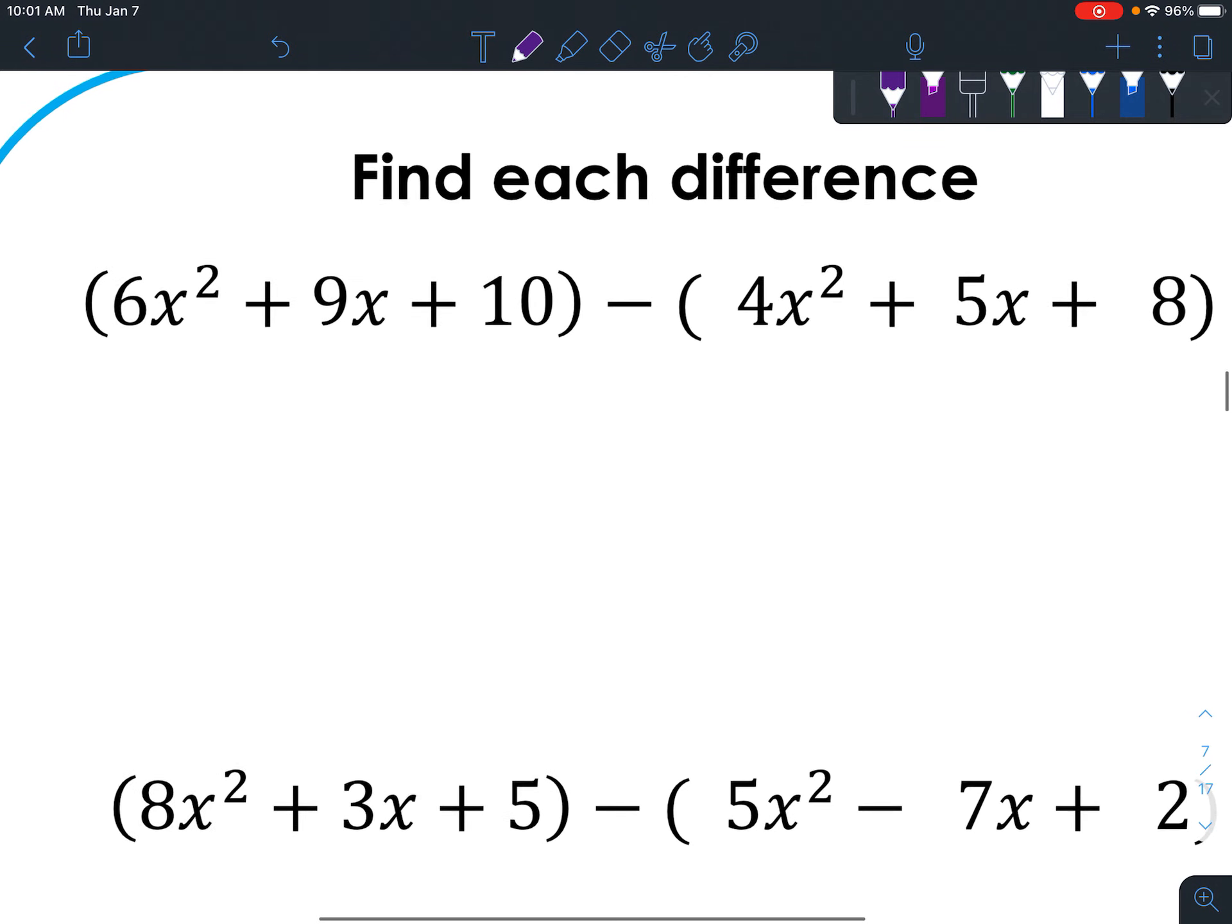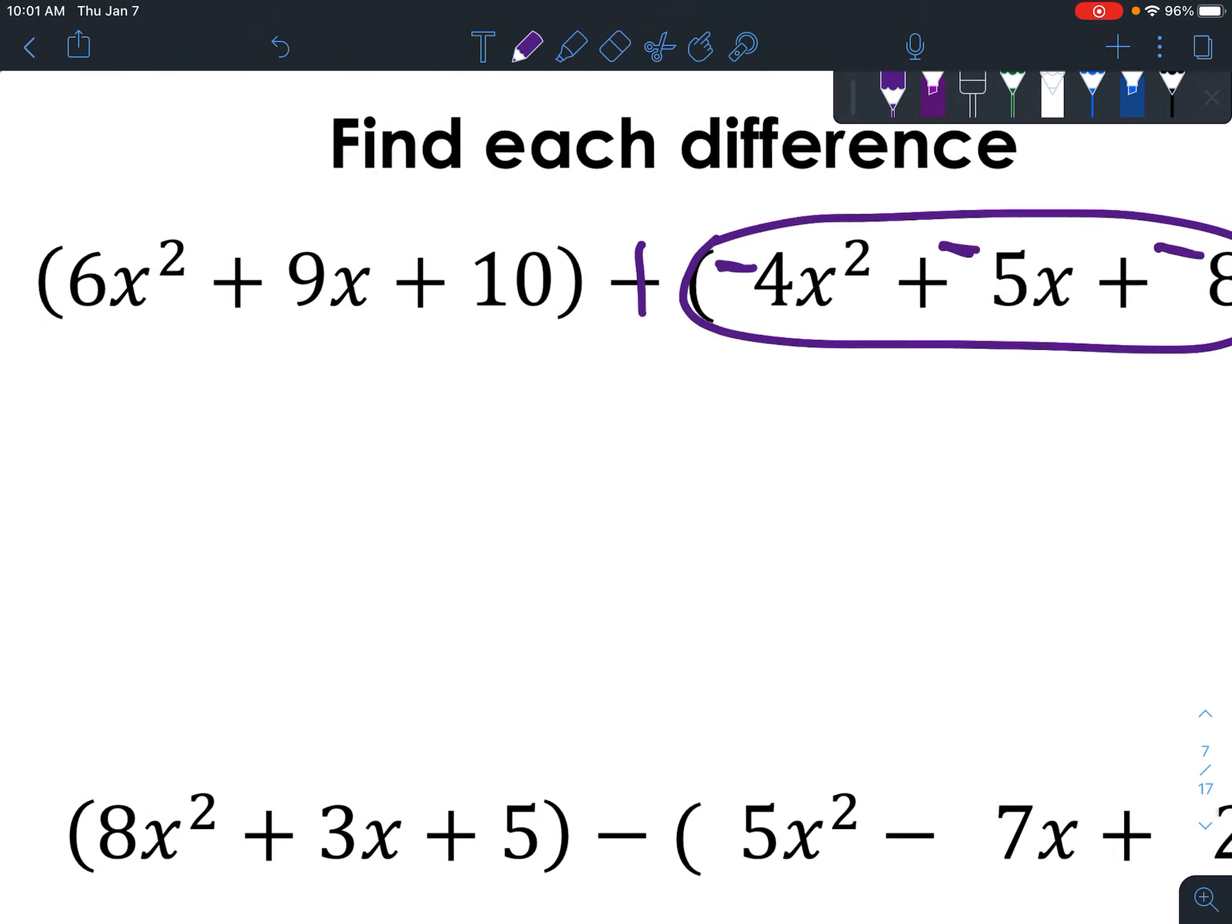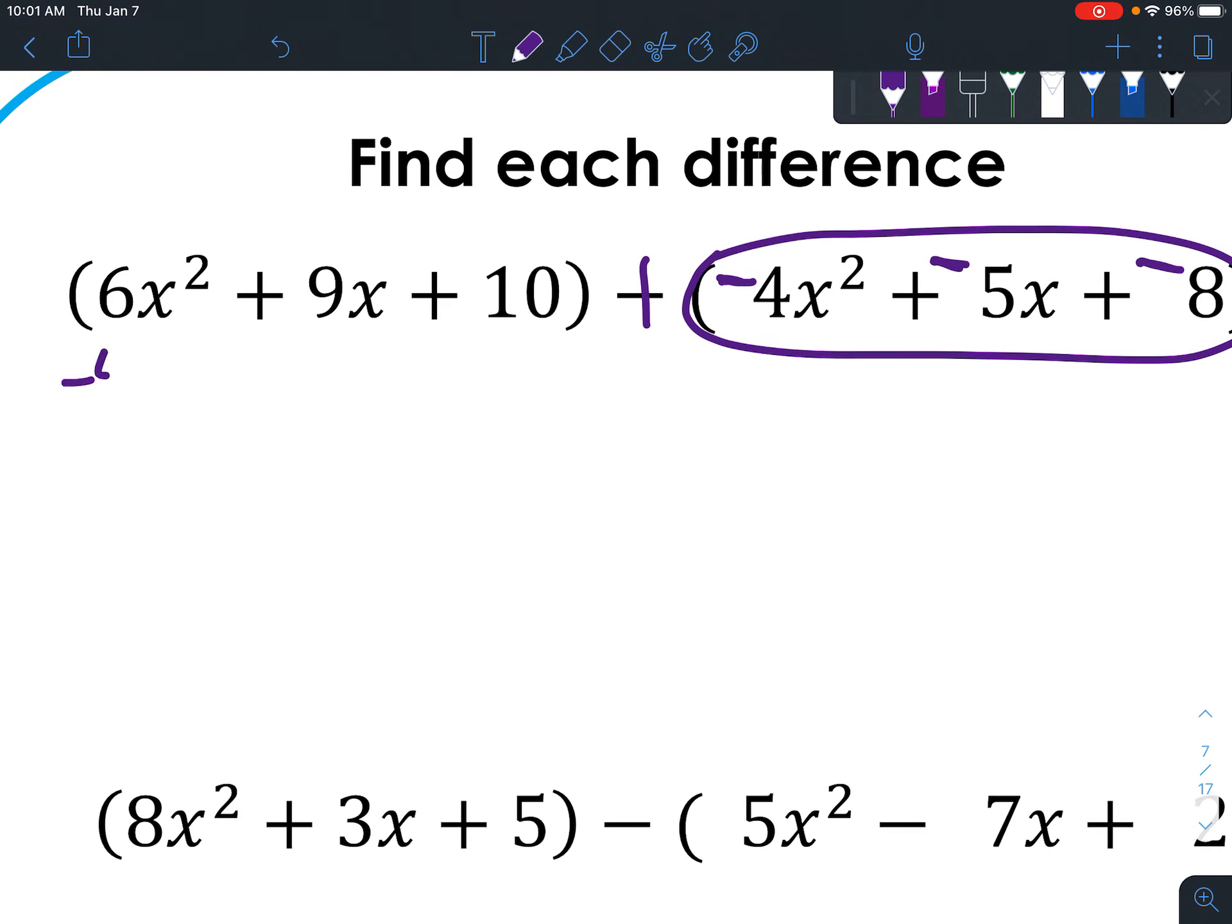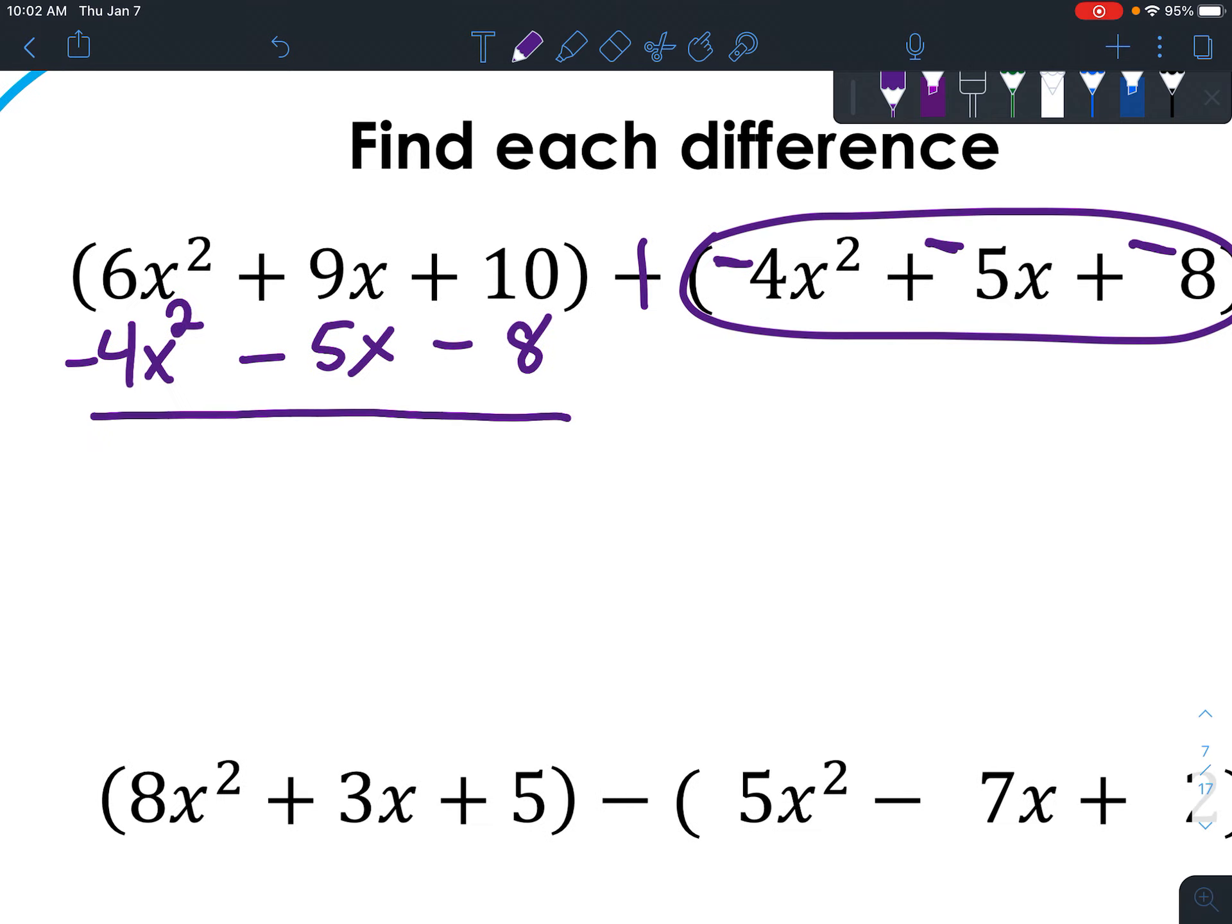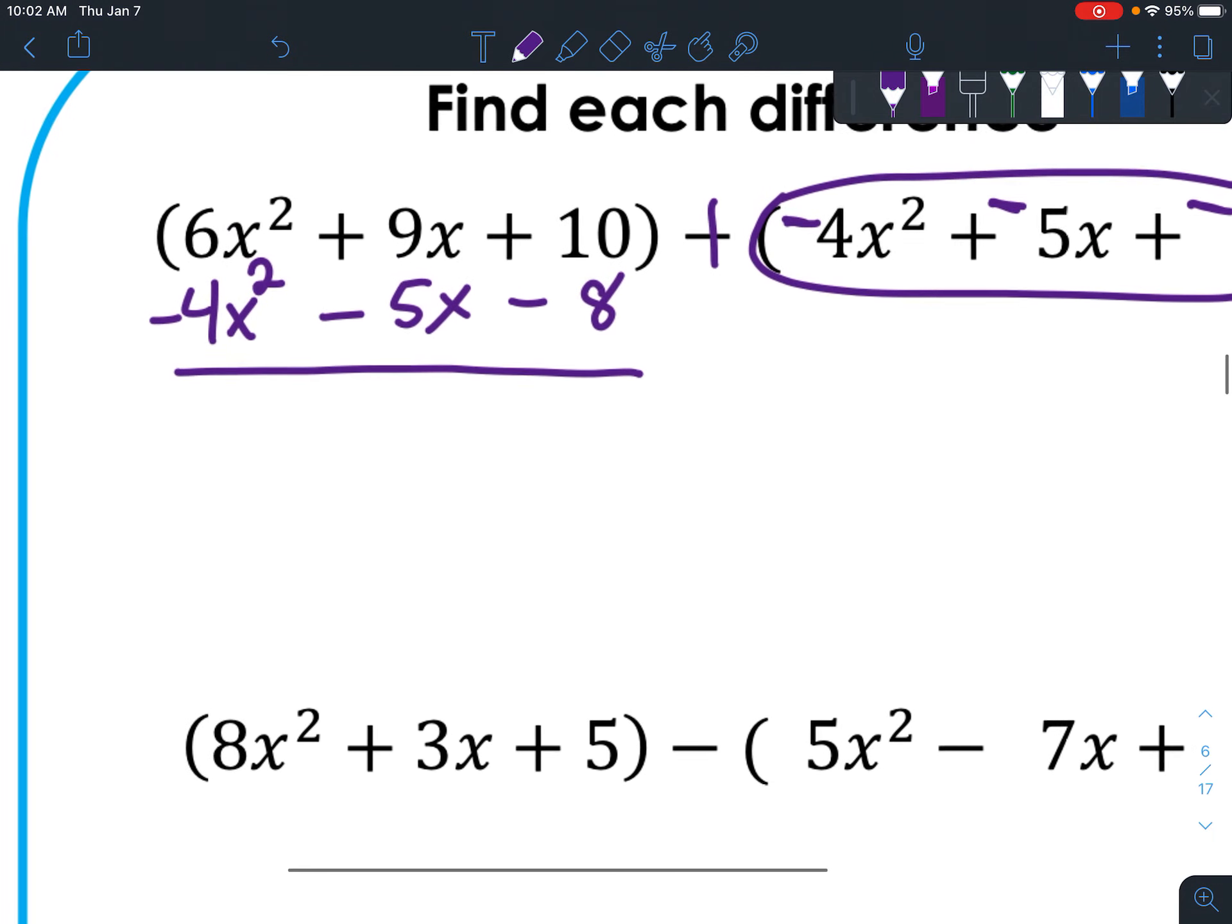Let's look at our next example. So since we're subtracting this whole thing, go ahead and just say plus negative, negative, negative. Now when we line it up, we're going to put negative 4x squared underneath the first term. Negative 5x, now these ones are all in order. Sometimes they won't be in order, and so that's why you'll just have to kind of check that you have the same terms.